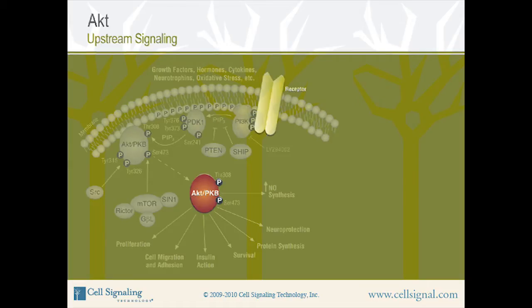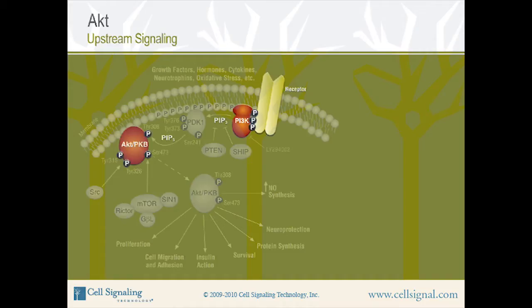Membrane receptors signal through phosphoinositide 3-kinase, known as PI3K, to activate AKT. PI3K phosphorylates phosphatidylinositol-4,5-bisphosphate, known as PIP2, to generate phosphatidylinositol-3,4,5-triphosphate, also called PIP3. PIP3 binds to the PH domains of several proteins, including AKT and PDK1. This membrane-anchored PIP3 binds to the PH domain of AKT and causes the recruitment of AKT to the cell membrane.